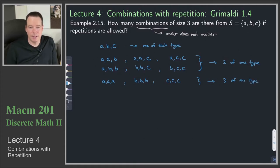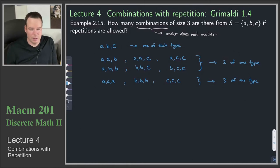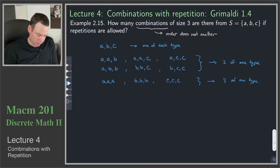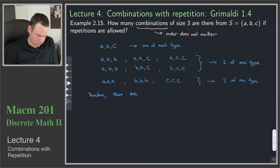We could also select three of one kind: all A's, all B's, or all C's — those are our three of one type. And that's really it; that's all the possible combinations. We listed them systematically: one of every type, one that we doubled up on, and one that we tripled up on. In total, there are 10 combinations.